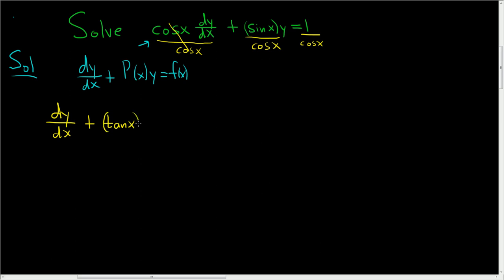And let me put parentheses around it here, and then times y equals, and then 1 over cosine is secant x. So now we'll compute the integrating factor.